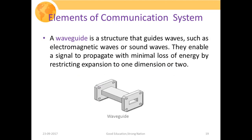A waveguide is a structure that guides waves such as electromagnetic waves or sound waves. It enables signals to propagate with minimal loss of energy by restricting expansion to one or two dimensions. The source generates a signal that gets passed through the constrained inlet, which restricts the expansion of that signal so it passes through the medium with less scattering, in the form of a pointed beam.